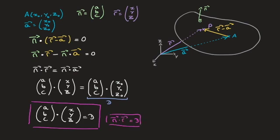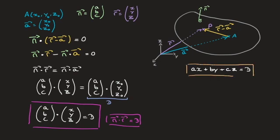If we go ahead and calculate the scalar product on the left-hand side of this equation, this result turns into the Cartesian equation of a plane. On the left-hand side we'd have ax + by + cz, and that equals D. So the Cartesian equation of a plane is ax + by + cz = D. I'll box that result as well — that's how we derive these two forms.